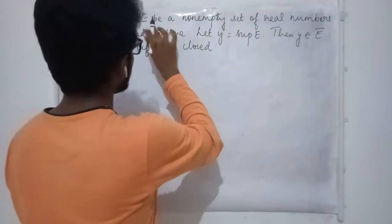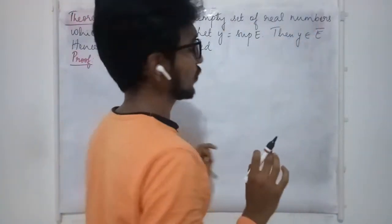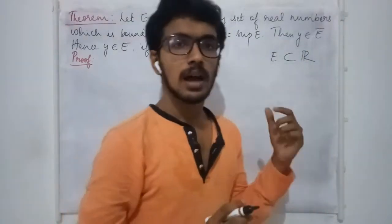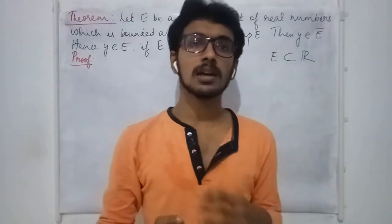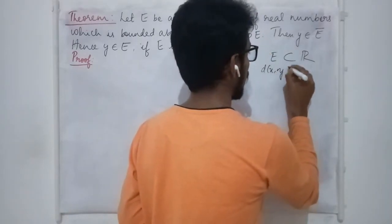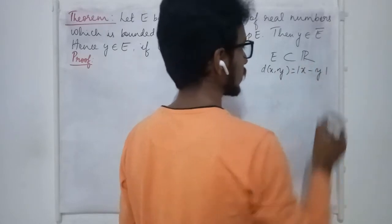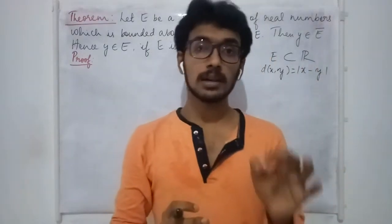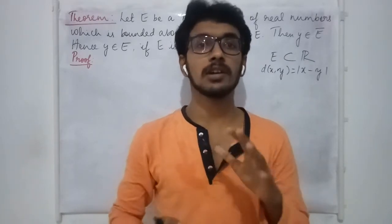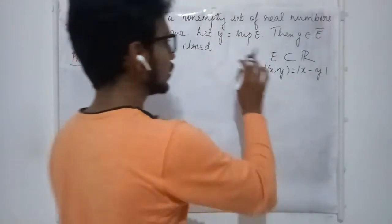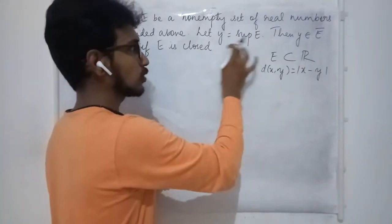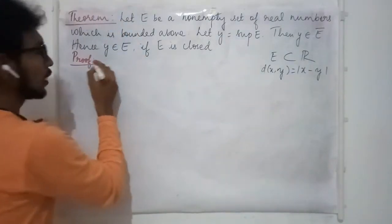E is a non-empty set of real numbers, so E is considered as a subset of R. Since no metric is specified, we consider the standard Euclidean metric defined on R. Note that whenever a metric is not specified, you should consider that the standard metric is defined on that set. Y is given to be the supremum of E.